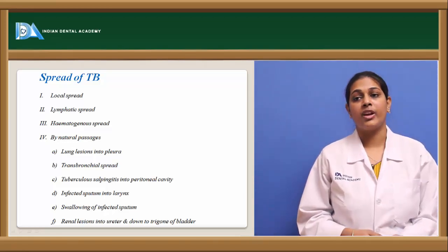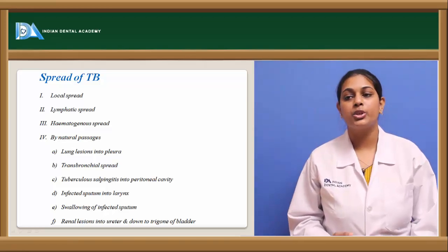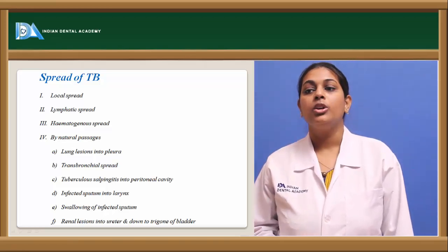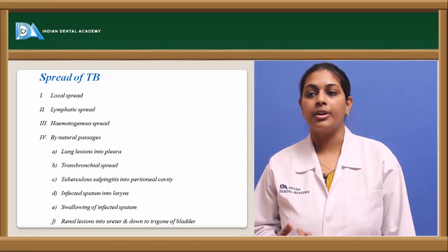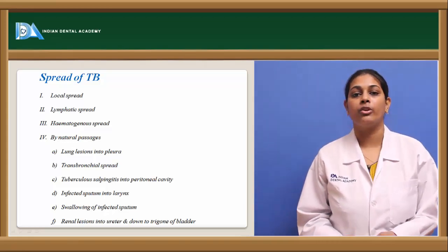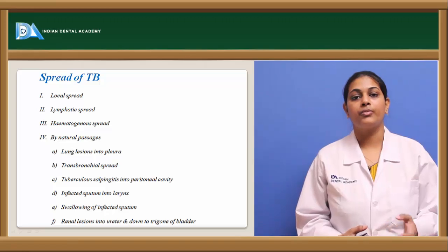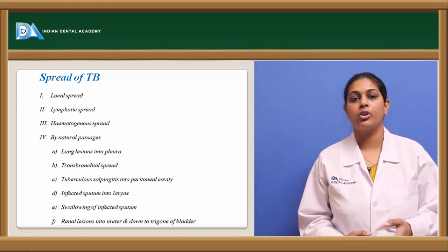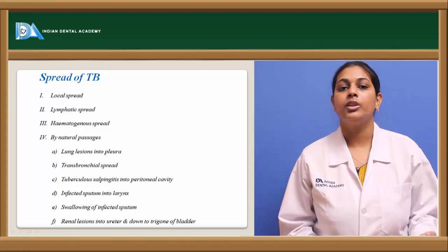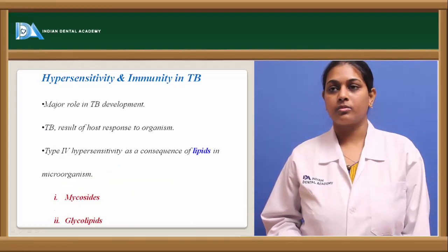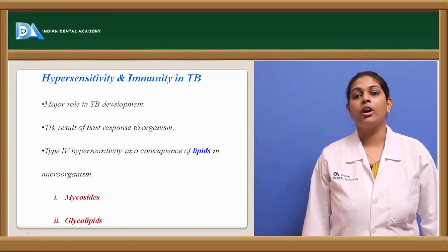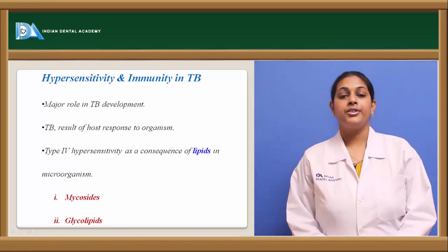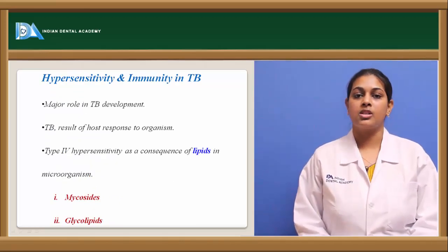Another natural passage is renal lesions which pass into the ureter down to the trigone of the bladder, from where they may spread to the bladder. These are the routes for the spread of tuberculosis within the same individual.